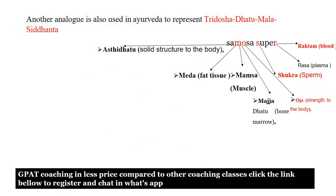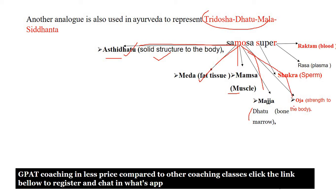Another Siddhanta in Ayurveda is Tridoshya Dhatu Mala Siddhanta. To remember it, use the mnemonic 'Samosa is super': A = Astidhatu (solid bone structure); M = Medha (fat tissue); M = Mamsa (muscle); M = Majja (bone marrow); O = Oja (strength of the body); S = Shukra (sperm); R = Rasa (plasma); Rakta = blood. So Dhatus include blood, plasma, sperm, strength, bone marrow, muscle, fat, and bone.